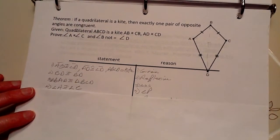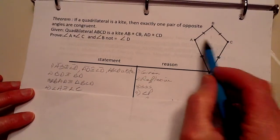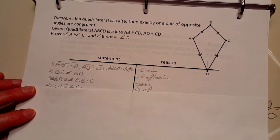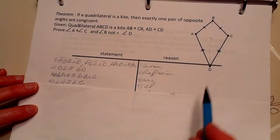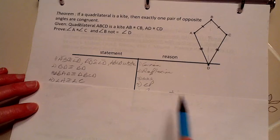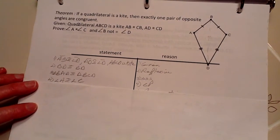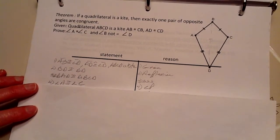And therefore, angles A and C are congruent because they're corresponding parts of these two congruent triangles, which we just identified.